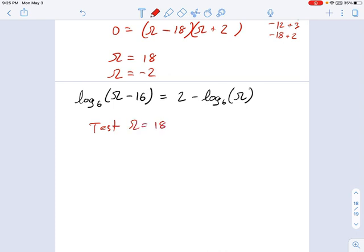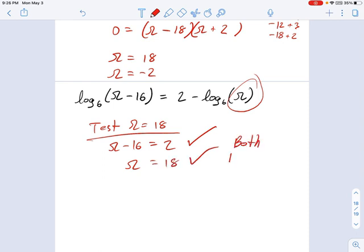So let's test omega equals 18. Omega minus 16, I guess that'll be 2, so that's okay. And omega by itself, this guy over here, well, that's just 18. So those are both positive, both positive arguments. That's really what I'm looking for here, okay?